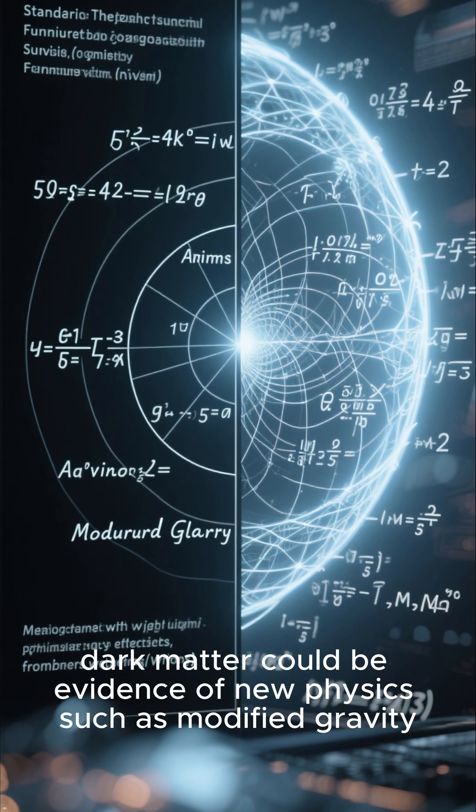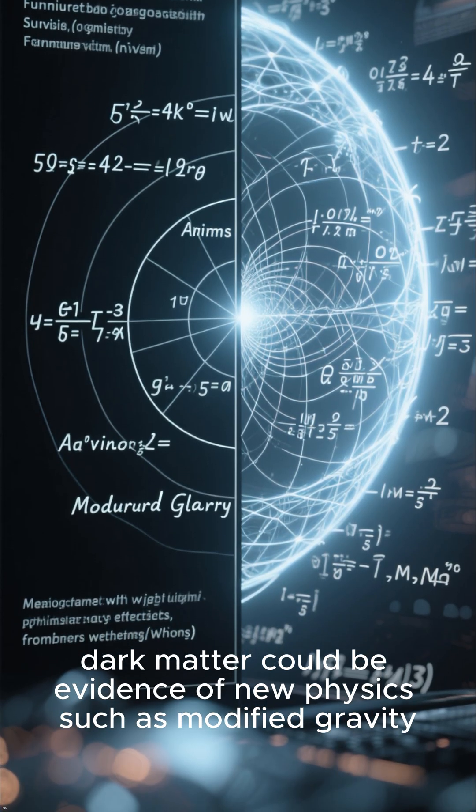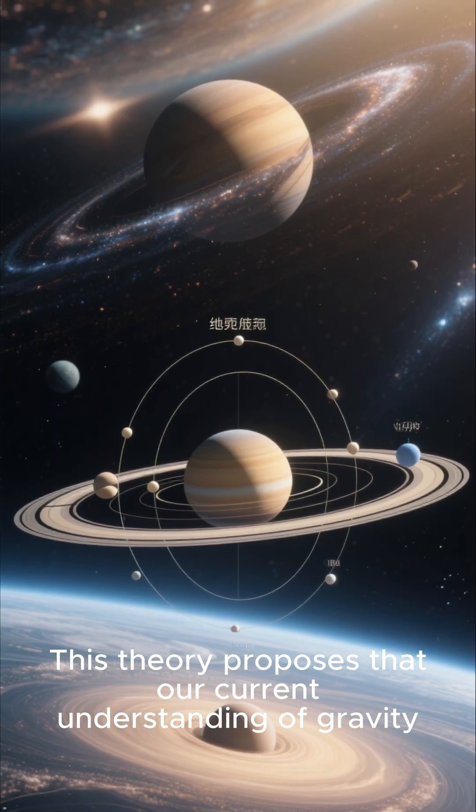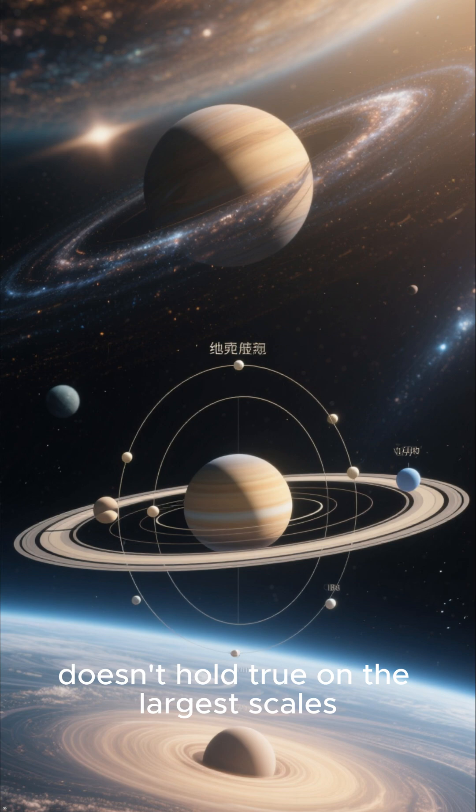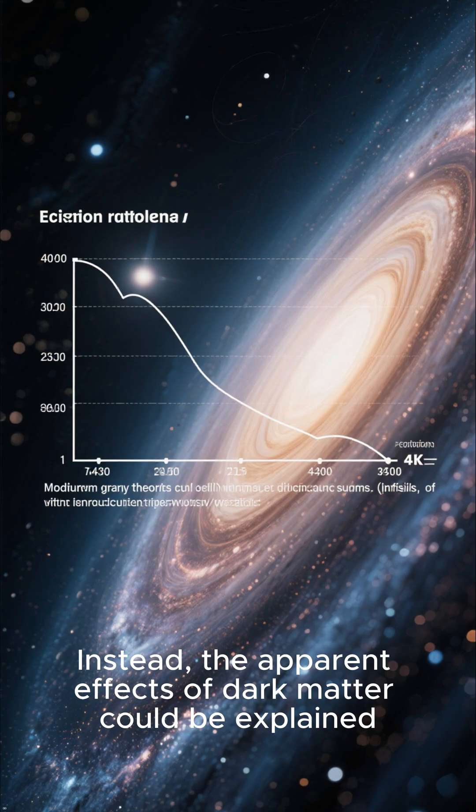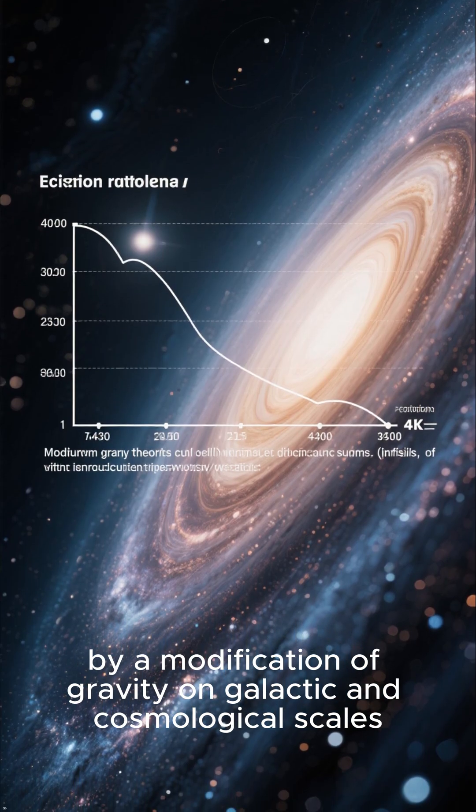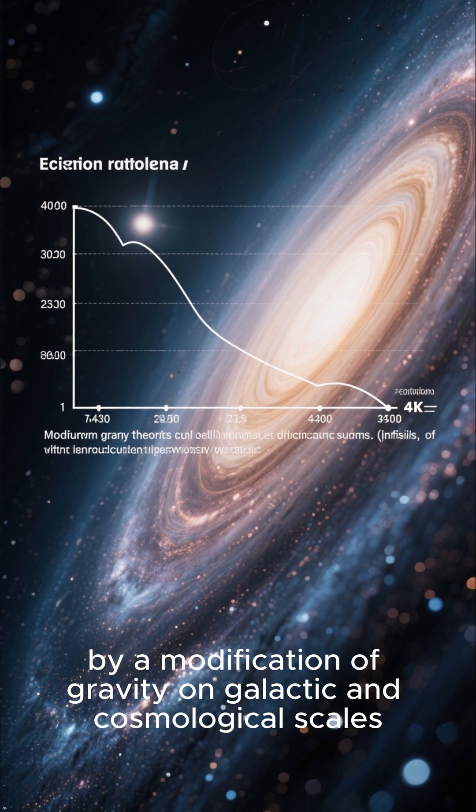Alternatively, dark matter could be evidence of new physics such as modified gravity. This theory proposes that our current understanding of gravity, which works flawlessly on Earth and in our solar system, doesn't hold true on the largest scales. Instead, the apparent effects of dark matter could be explained by a modification of gravity on galactic and cosmological scales.